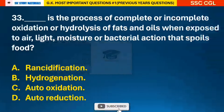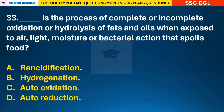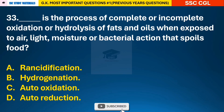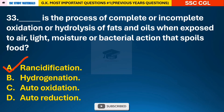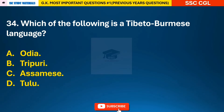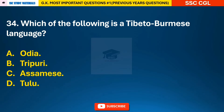Question 33: Rancidification is the process of complete or incomplete oxidation or hydrolysis of fats and oils when exposed to air, light, moisture or bacterial action that spoils food — answer A: Rancidification. Question 34: Which of the following is a Tibeto-Burmese language? — answer B: Tripuri.